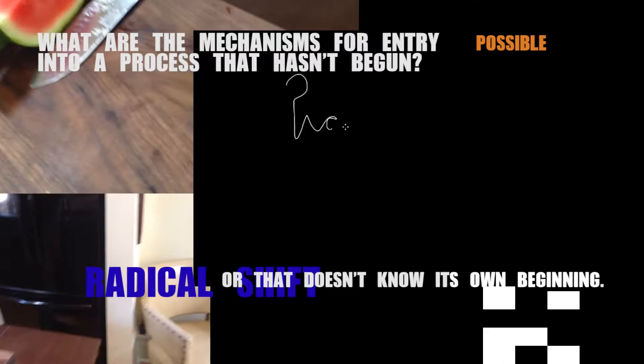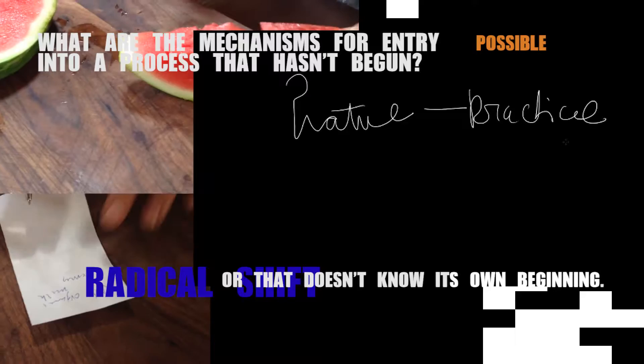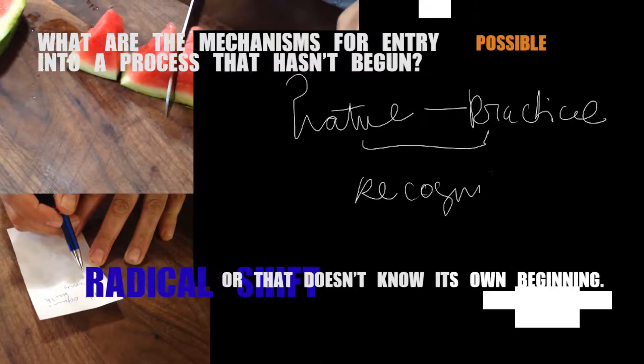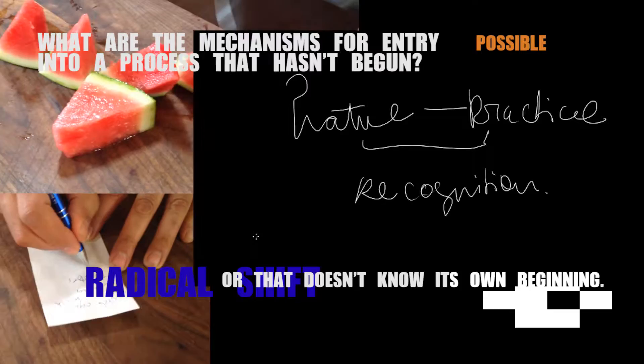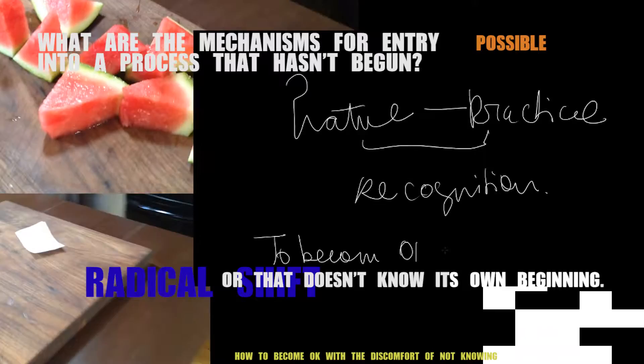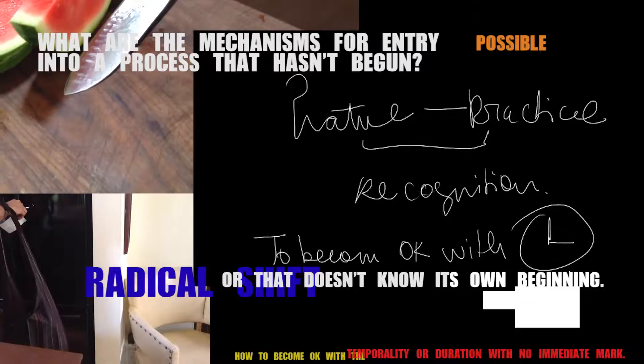Well it's a question of value, right? So we have a practice that assumes that the value of an event is recognizable in a human to human relation. Because nothing has ever happened that didn't alter the conditions. I mean we know that to be the case. And so one of the things I think a lot about is how to become okay with the discomfort of not knowing, or how to become okay with the kind of temporality or the kind of duration that doesn't leave an immediate mark.